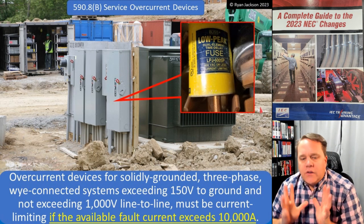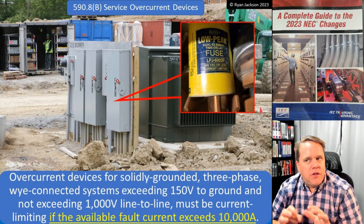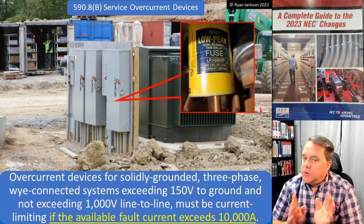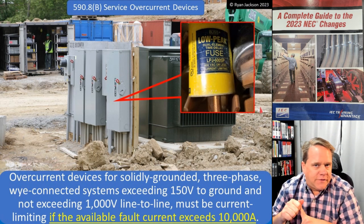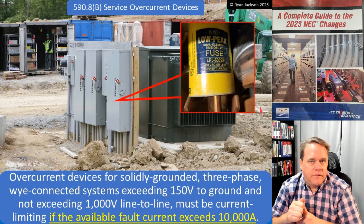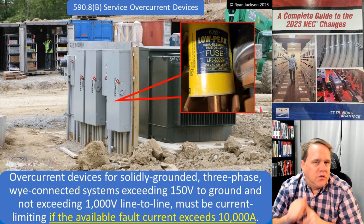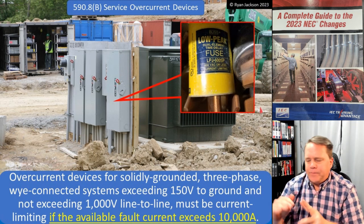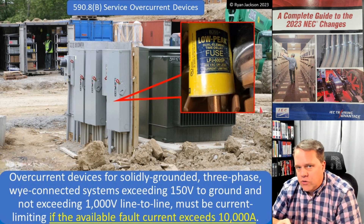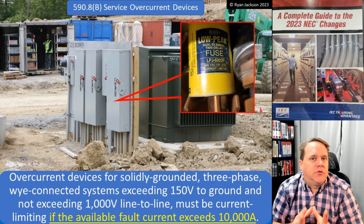Exceeding 150 volts to ground, not exceeding 1,000 volts line to line. Here in America, the only voltage system that really fits into that is 277/480. This only applies to Y-connected systems — it wouldn't apply to a 480-volt corner-grounded system, since that would be 480 volts to ground and this is only for Y-connected systems. So here in the States, we're talking 277/480. If you're in Canada or areas very close to Canada, you might see a 347/600-volt, three-phase, four-wire Y. Either of those would fall into the voltage parameters of this requirement.